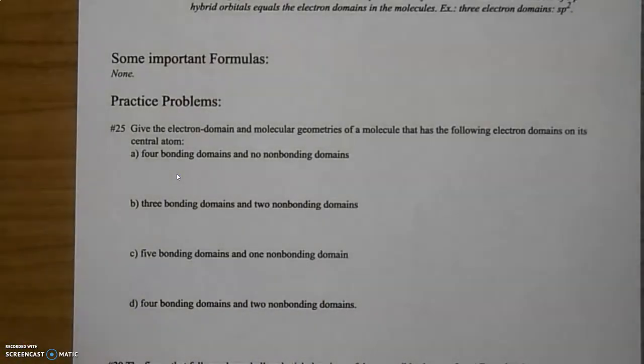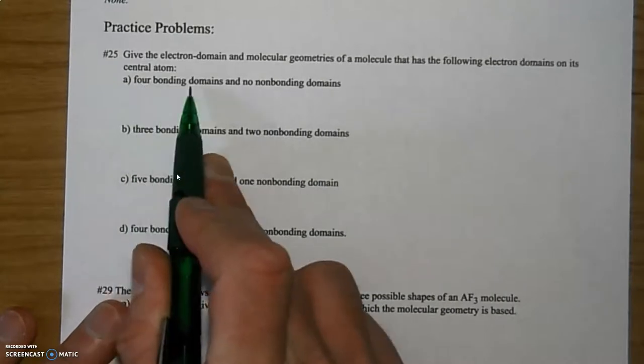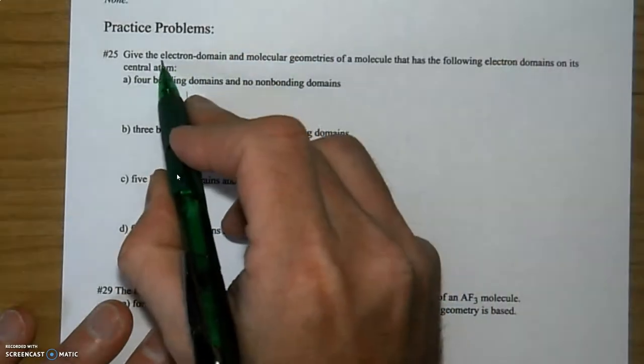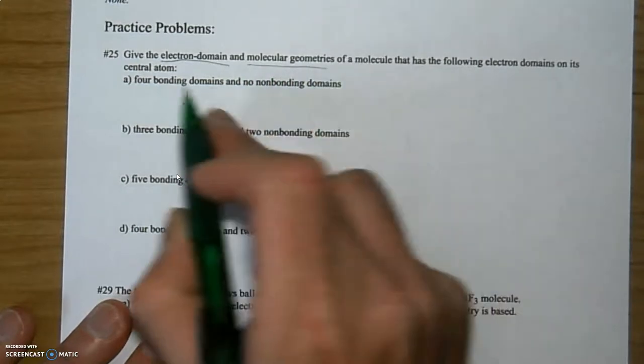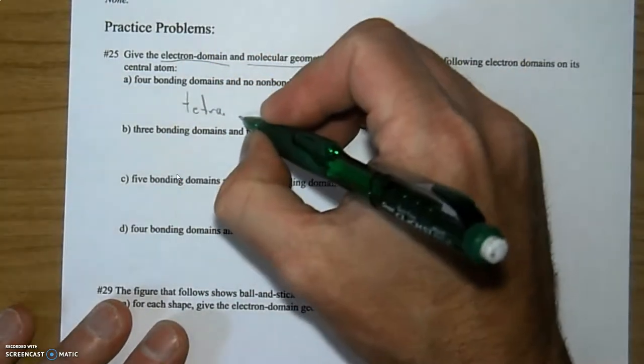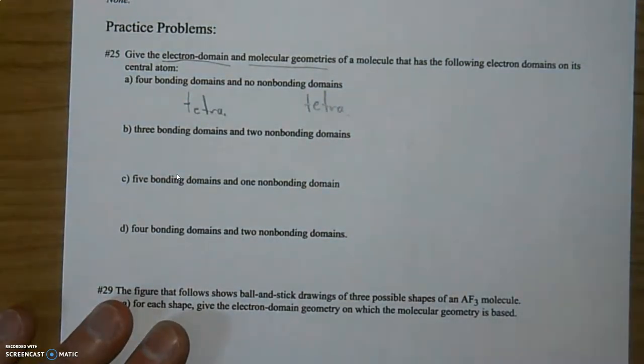First one we have on our list is number 25. It says give the electron domain and molecular geometries of a molecule that has the following electron domains on its central atom. You have four bonding domains and no non-bonding domains. For total, that would mean it's tetrahedral for the electron domain geometry and it would also still be tetrahedral for the molecular geometry. Four and zero, done with a.